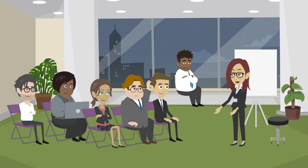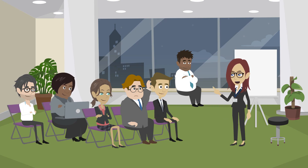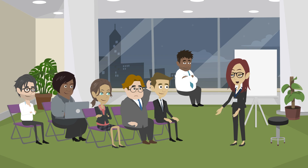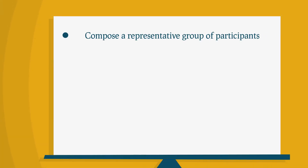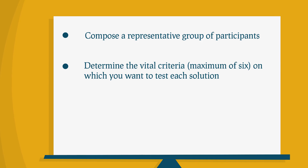When selecting solutions that are going to be introduced, Lean states that consensus is very important. Compose a representative group of participants whose judgment you can trust. Determine the vital criteria — maximum of 6 — on which you want to test each solution, and possibly agree on a weighting factor: must have, want to have, or bonus.